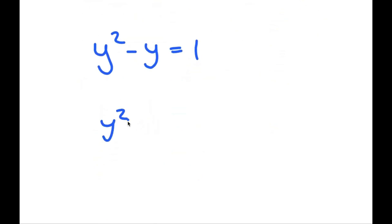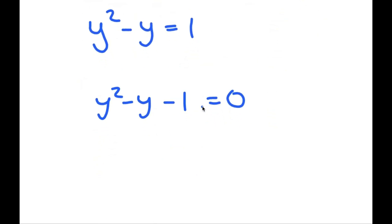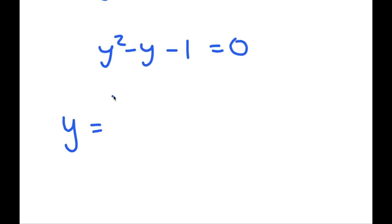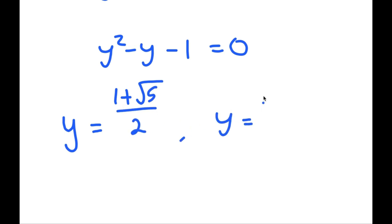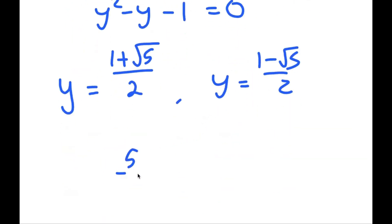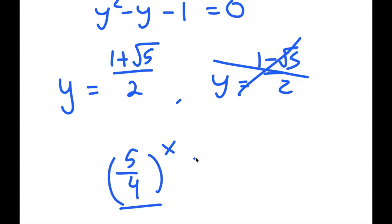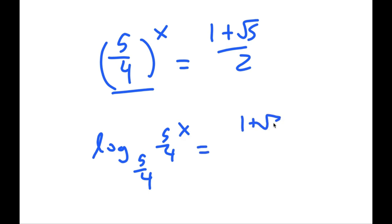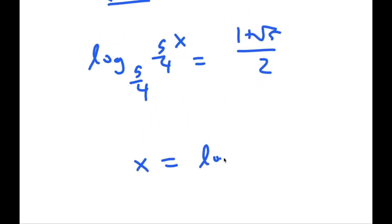So now I have y squared minus y is equal to 1, which means y squared minus y minus 1 equals 0. I get two values of y. Plugging this into the quadratic formula, y equals (1 plus the square root of 5) over 2, and y equals (1 minus the square root of 5) over 2. Since (5/4)^x can't equal a negative number, we discard the negative solution. Taking log base (5/4) on both sides gives x equals log base (5/4) of (1 plus the square root of 5) over 2.